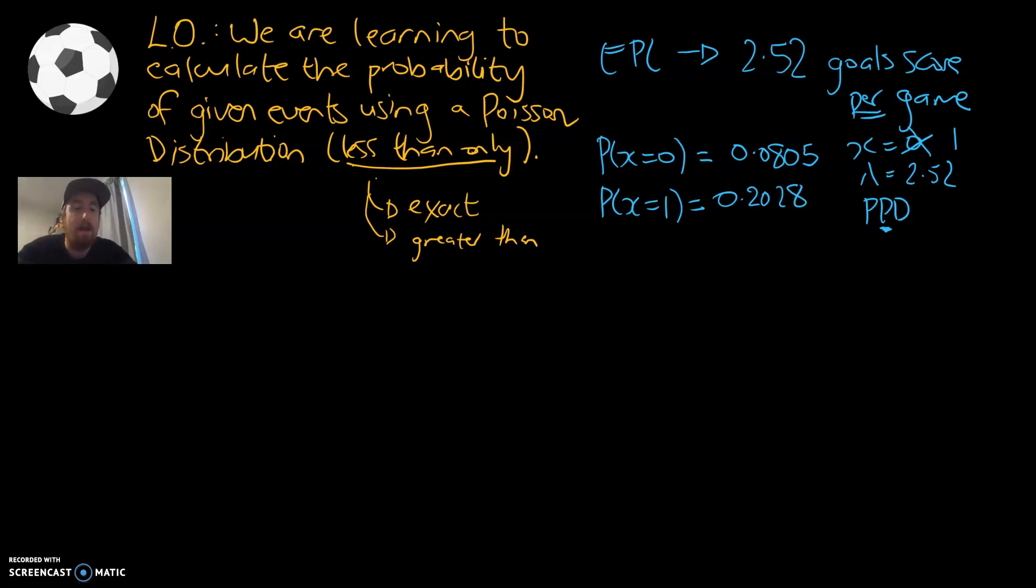That's also rounded to 4DP. So we're getting a bit better, more likely I'm going to be seeing one goal happening. What's the probability of me going to that game and seeing two goals being scored? I'm going to cross out that one, so that one is now a two. That is 0.2555, also rounded to 4DP.